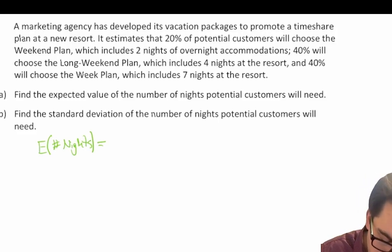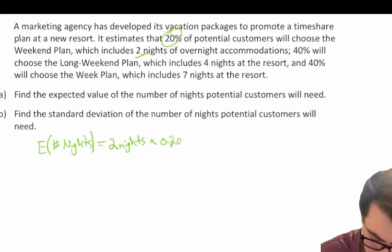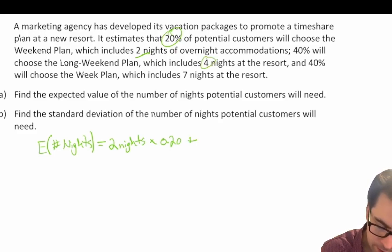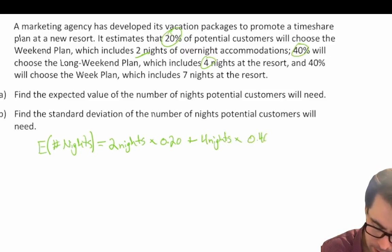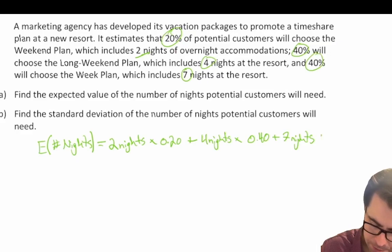Our first observed value of x for number of nights is two nights — that's the weekend plan — times the probability that occurs, which we're told is 20% or 0.2, plus the long weekend plan which is four nights times the probability that event occurs, which is 40% of the time, plus the third plan which is seven nights, and we're told that occurs also 40% of the time.